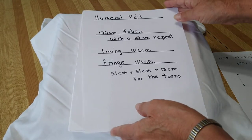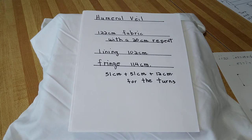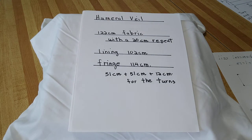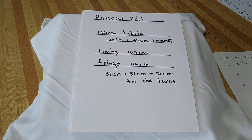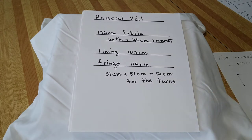You will need 122 centimeters of fabric with a 20 centimeter repeat. For the lining, you'll need 102 centimeters, and for the fringe, 114 centimeters. I've added 12 centimeters for the turns.